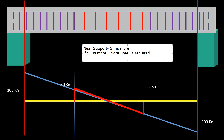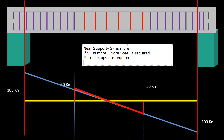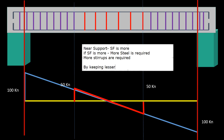If more steel is required, more stirrups are required, because stirrups are provided to take care of the shear force. And how can you give more stirrups? By keeping lesser spacing — by keeping lesser spacing, I can give more stirrups.